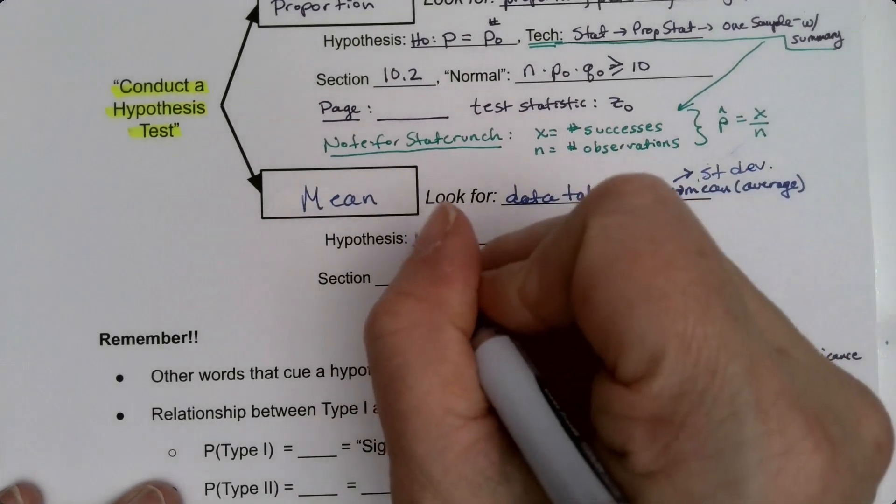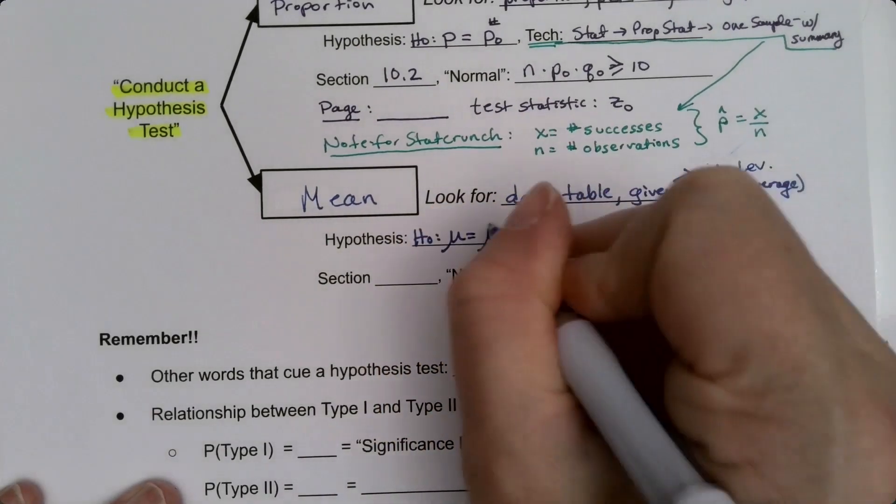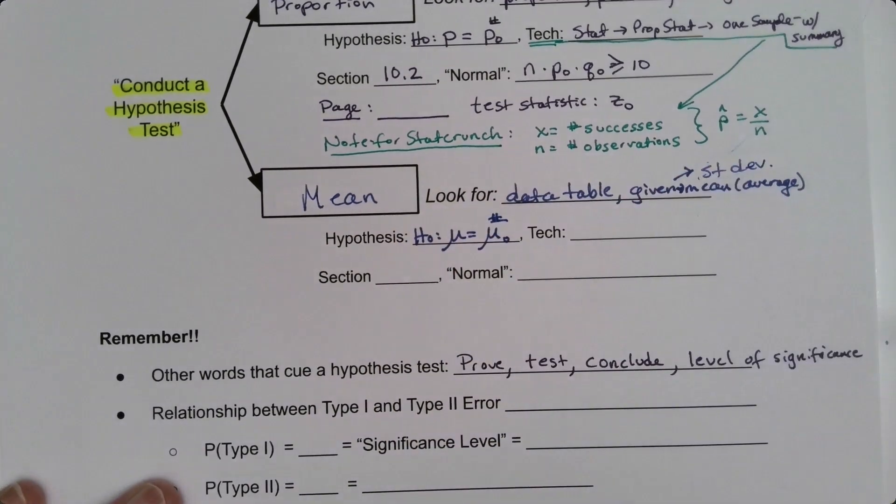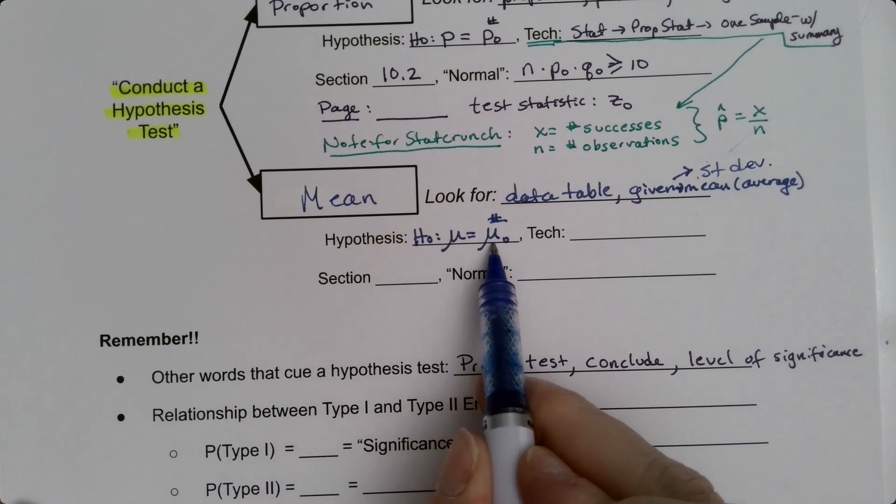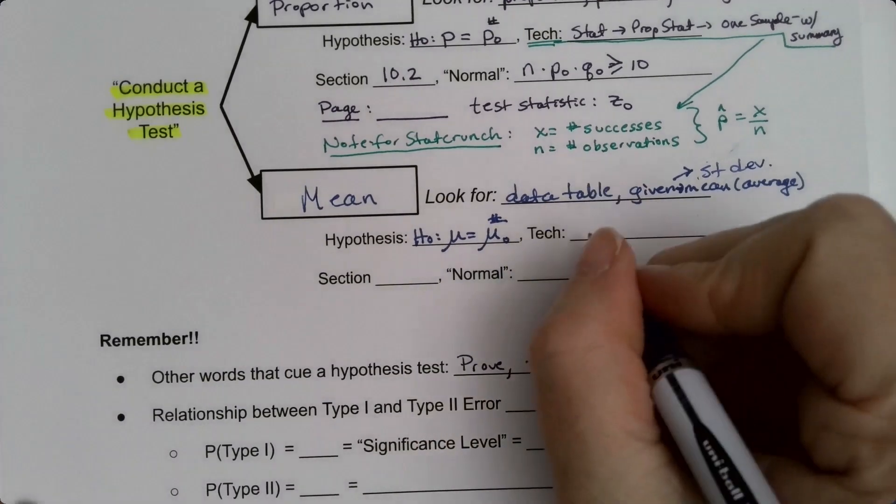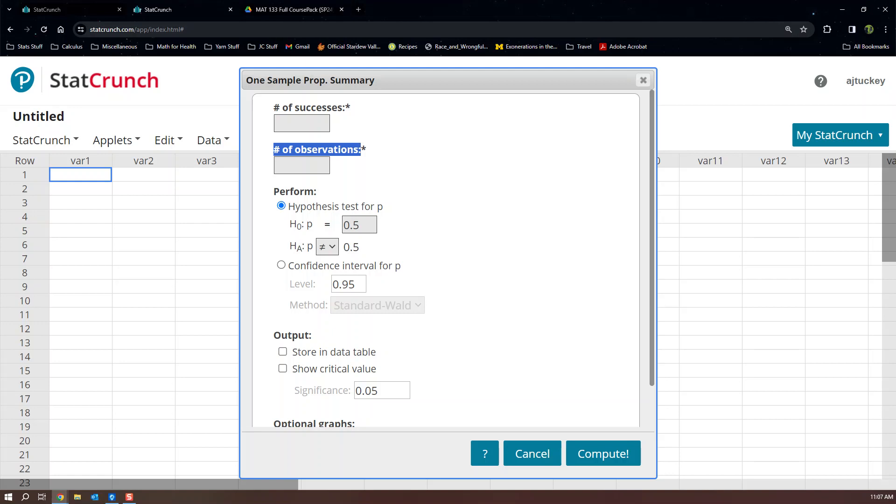The hypotheses for these ones are μ equals μ₀. μ₀ is going to be a number. So it'll be set up as μ equals a number. This will be a symbol, this will be a number. And the technology—well, let's see, let's go find the page in here and that'll tell us what technology it is.